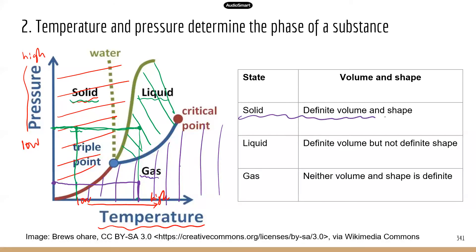When you look at solid, it has a definite volume and shape — the shape does not change and you can measure the volume. But when you look at liquid, it does have a volume you can measure, but there's no definite shape. If you put water in a circular container it's circular; in a rectangular container it's rectangular. For gas, they don't have definite volume or shape — gas can be in any shape and there's no definite volume.